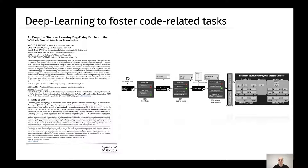In the last couple of years, different papers have been published aiming at assessing to which extent deep learning techniques can be used to foster code-related tasks. In this first work, Tufano and colleagues presented an empirical study of learning bug-fixing patches in the wild via neural machine translation, in the context of Java methods.